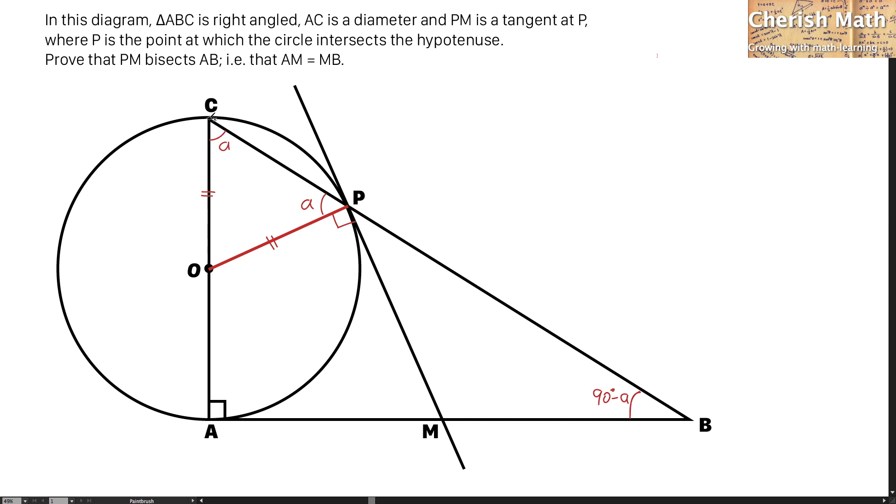Now, by referring to the straight line CPB, I can find out the value of this angle by using supplementary angles again. And here, that would be 90 degrees minus A.